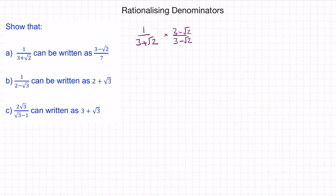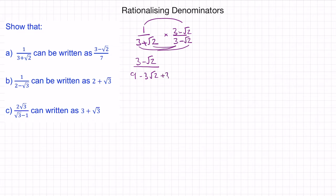So now we have 1 lot of 3 minus root 2, so 3 minus root 2 on top. And for our denominator, we have 3 times 3, which is 9. And then 3 times minus root 2, which is minus 3 root 2. So root 2 times 3, so positive 3 root 2. And then root 2 times minus root 2, so minus root 2 squared.